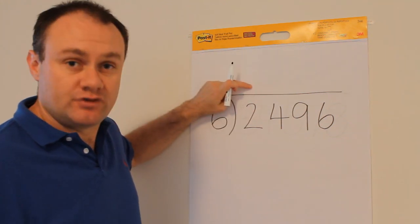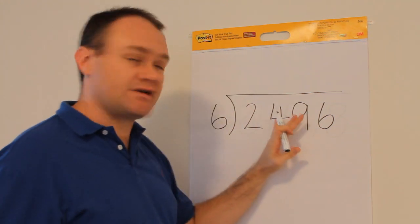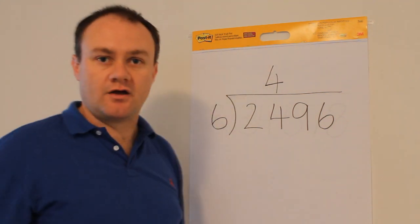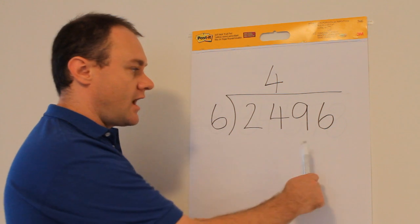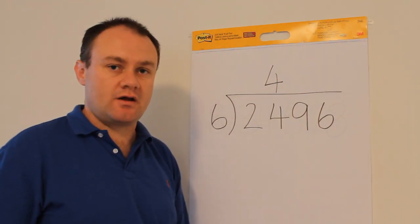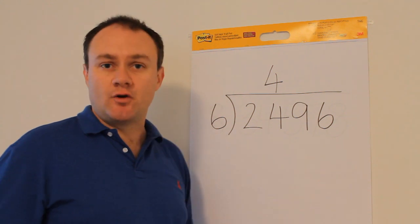Well, six fours are 24 so the answer is four. Rather than writing it above the two though, because we've included this next digit I write the answer here above the four and in goes the four. Now I move along to the next digit. How many times does six go into nine? It goes in once and there'll be three left over.